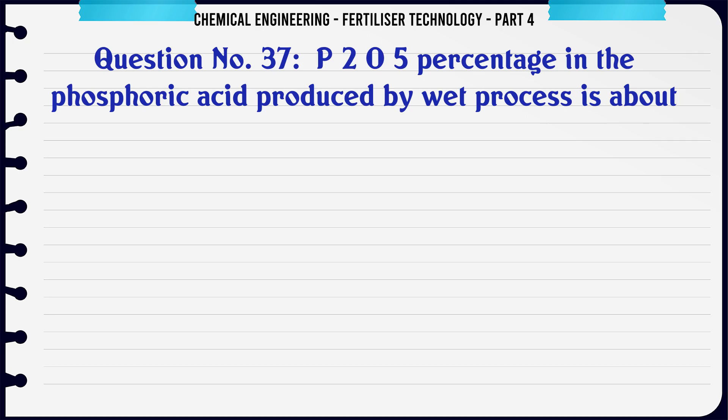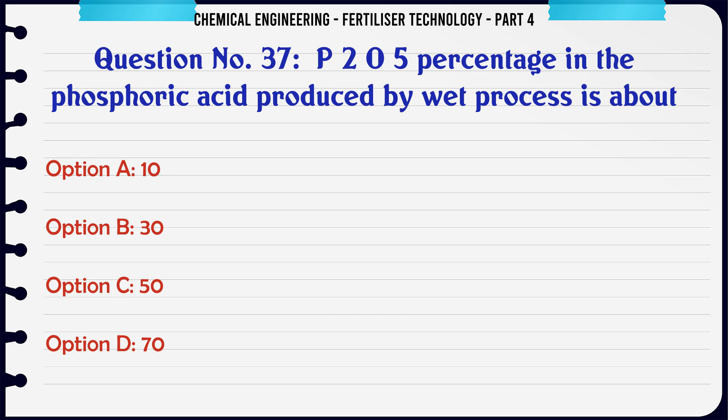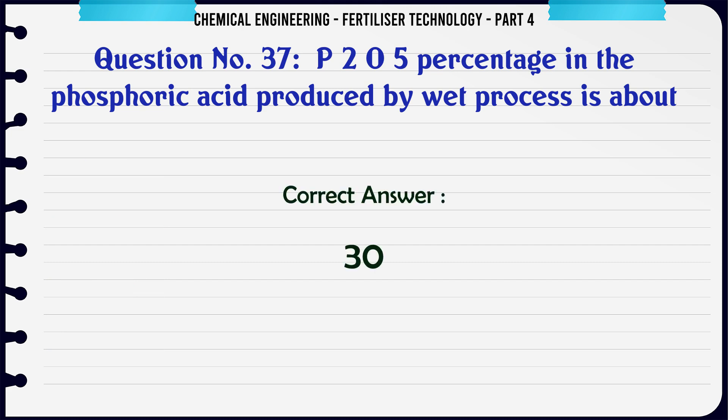P2O5 percentage in the phosphoric acid produced by wet process is about: a. 10%, b. 30%, c. 50%, d. 70%. The correct answer is: 30%.